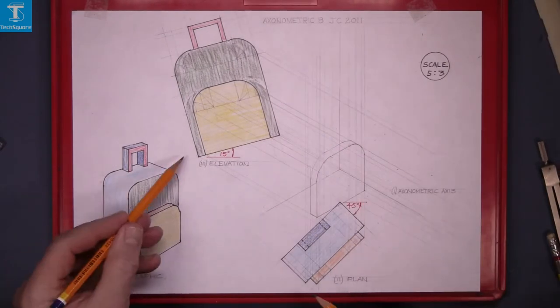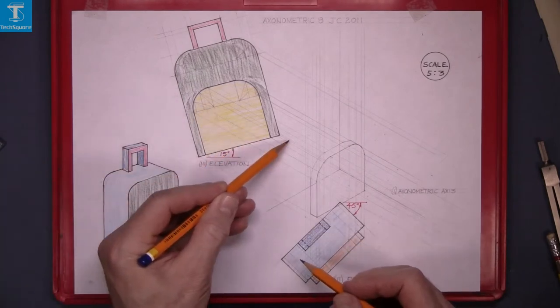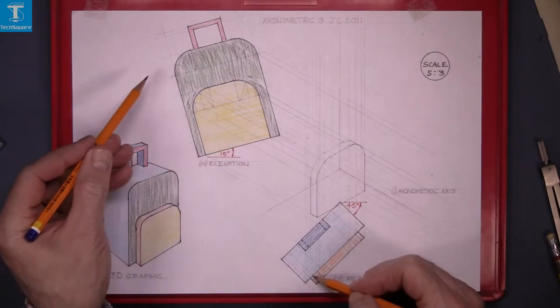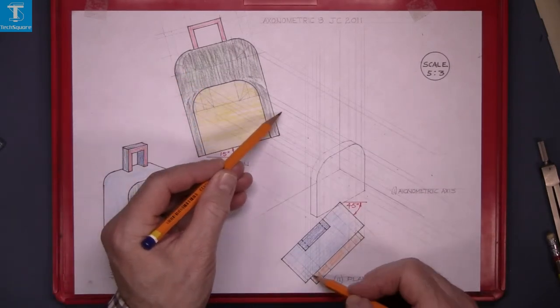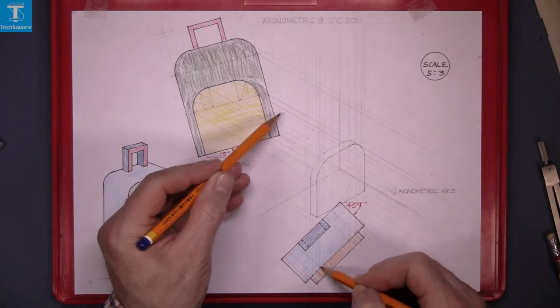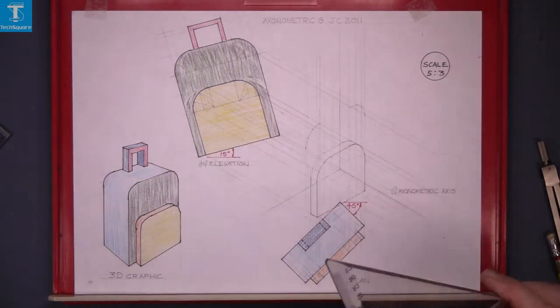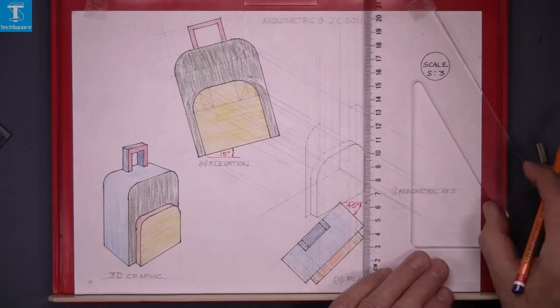Now we'll get the front part first. That's one point on the curve, two, three, and four. That's the curve now. Now the back curve is the same. And that's the front surface done.